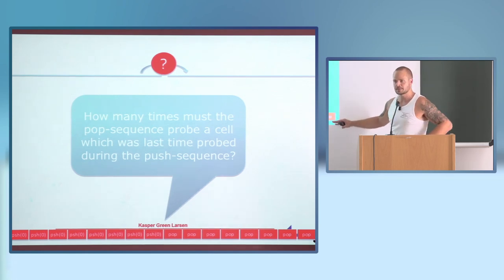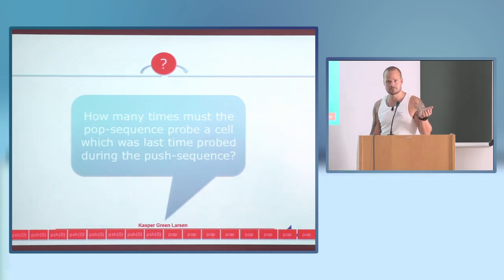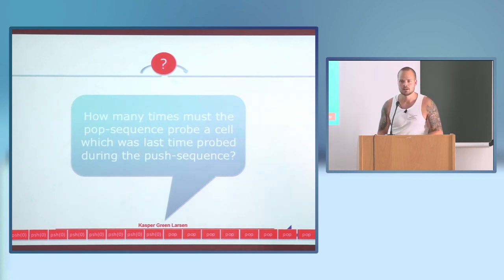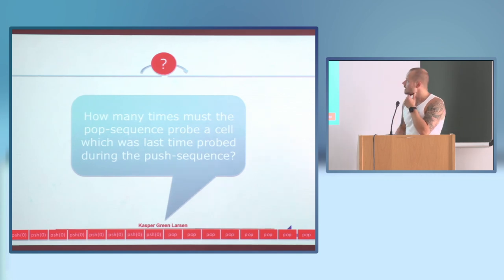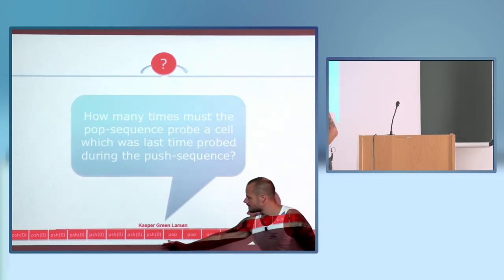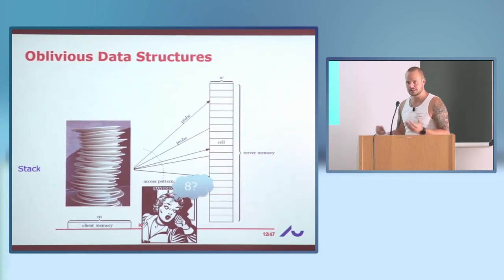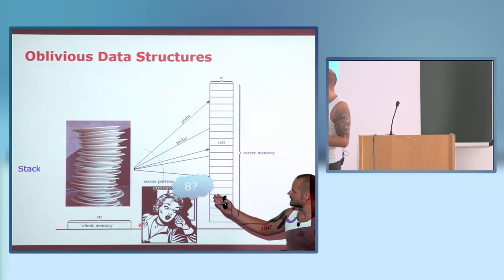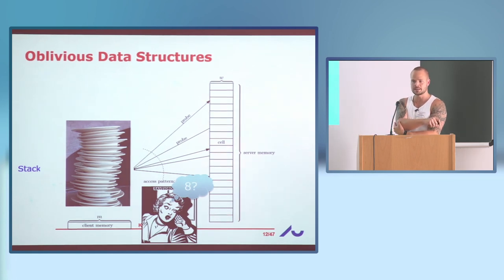The trick is to look at a dummy sequence of operations: push the all-zeros bit string eight times and then pop them off again. This is trivial if not required to be oblivious — you don't even need to do anything, you just output zero every time. But the question is: will you still need to do a lot of probes during the second half into stuff that was last written in the first half? The answer is yes, because you need to be oblivious. An adversary can look at what you're doing and count how many times the second half probes something that was last written in the first half — and that's something the adversary can see.